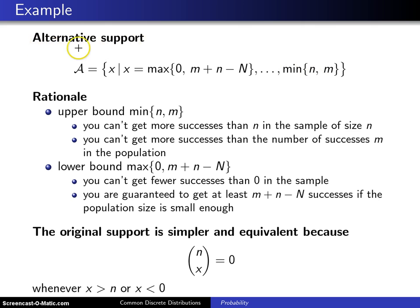Some authors like to consider this alternative support, which runs from the maximum of 0 and m plus n minus capital N up to the minimum of n and m. This is a lot more clunky and difficult to write, but it is worth thinking about why they suggest this alternative support.